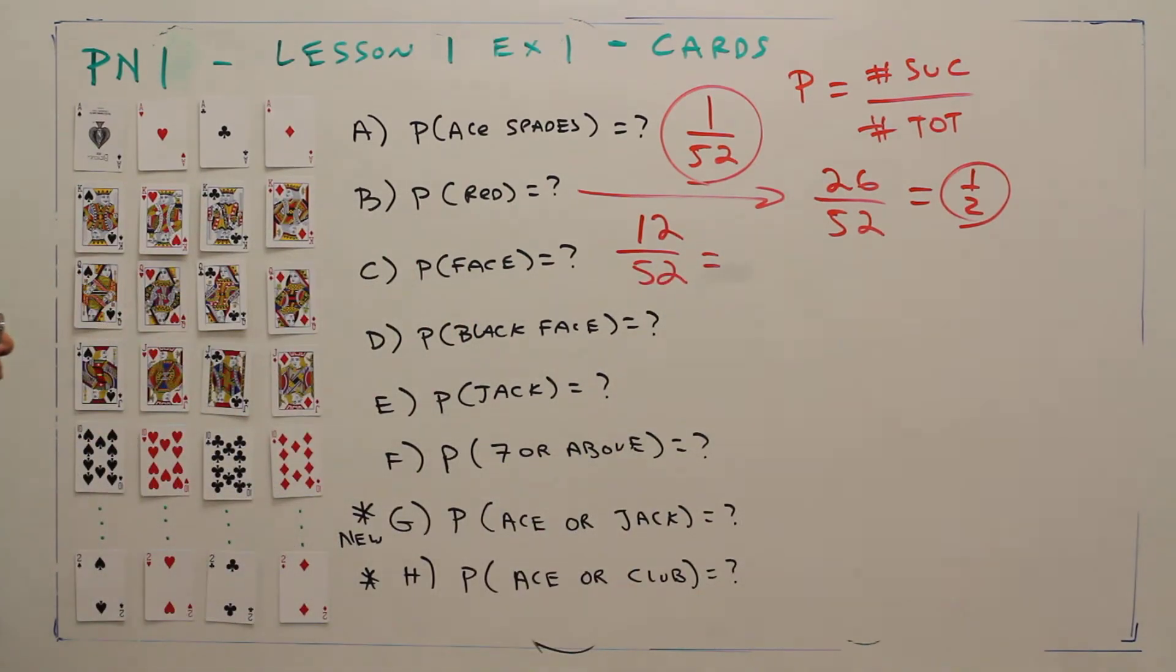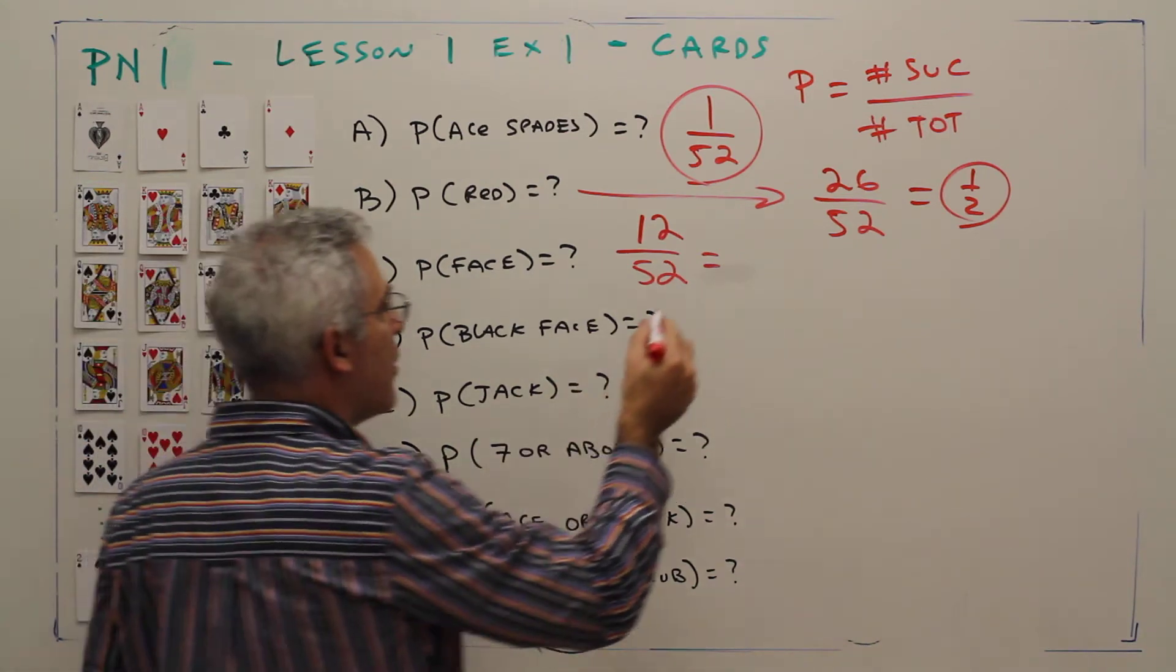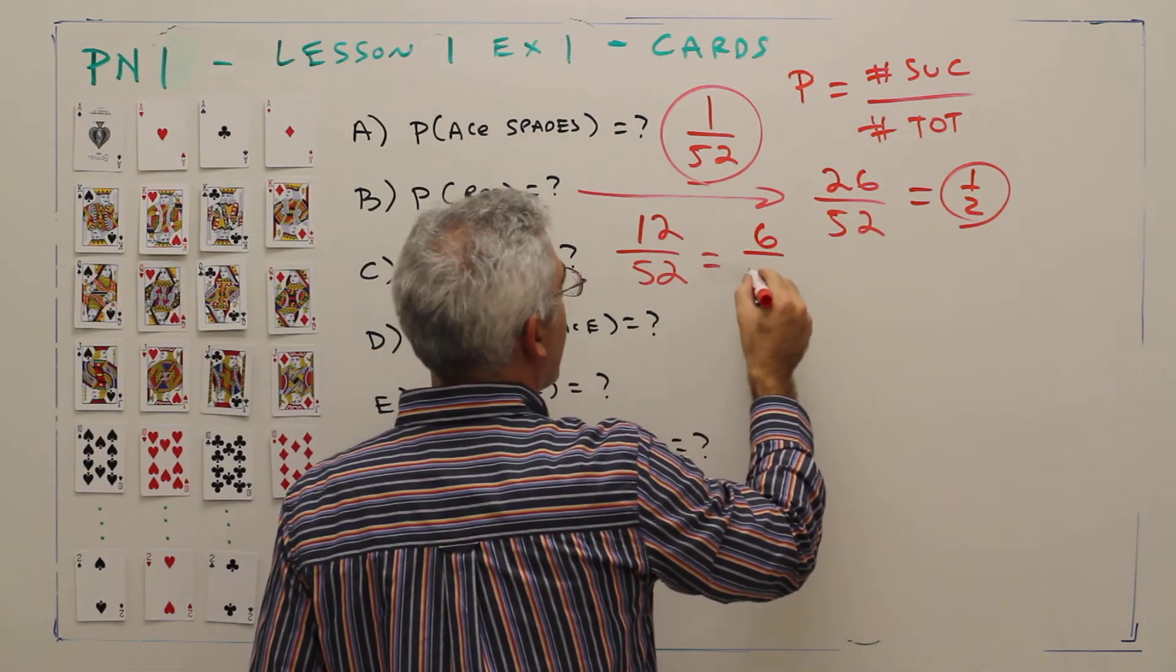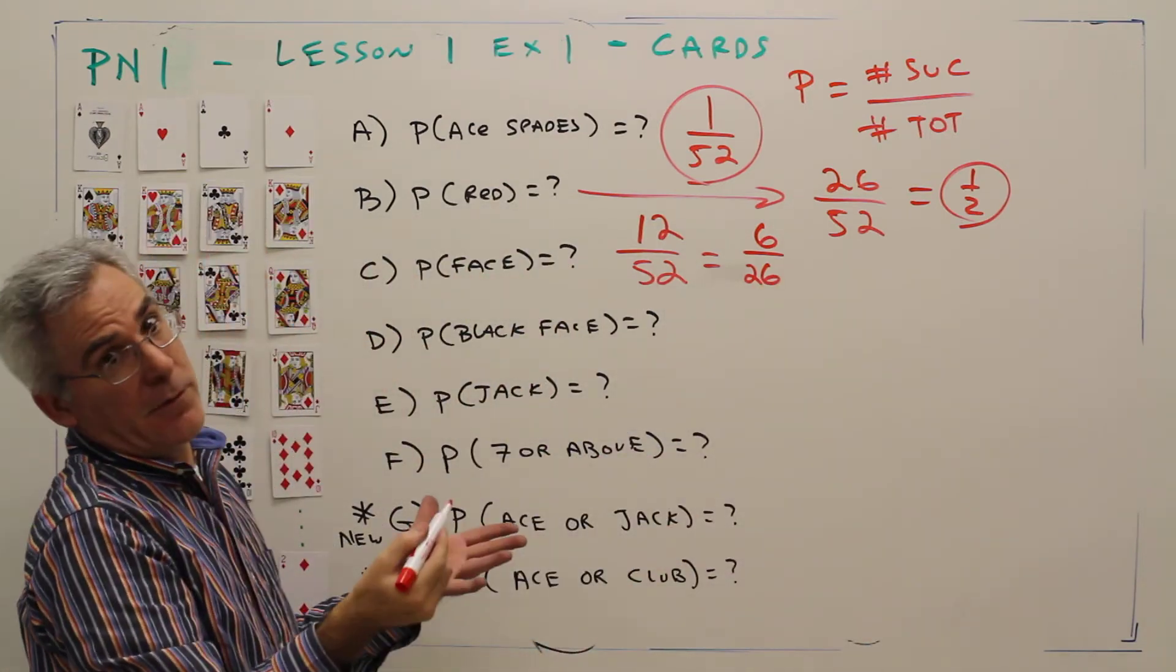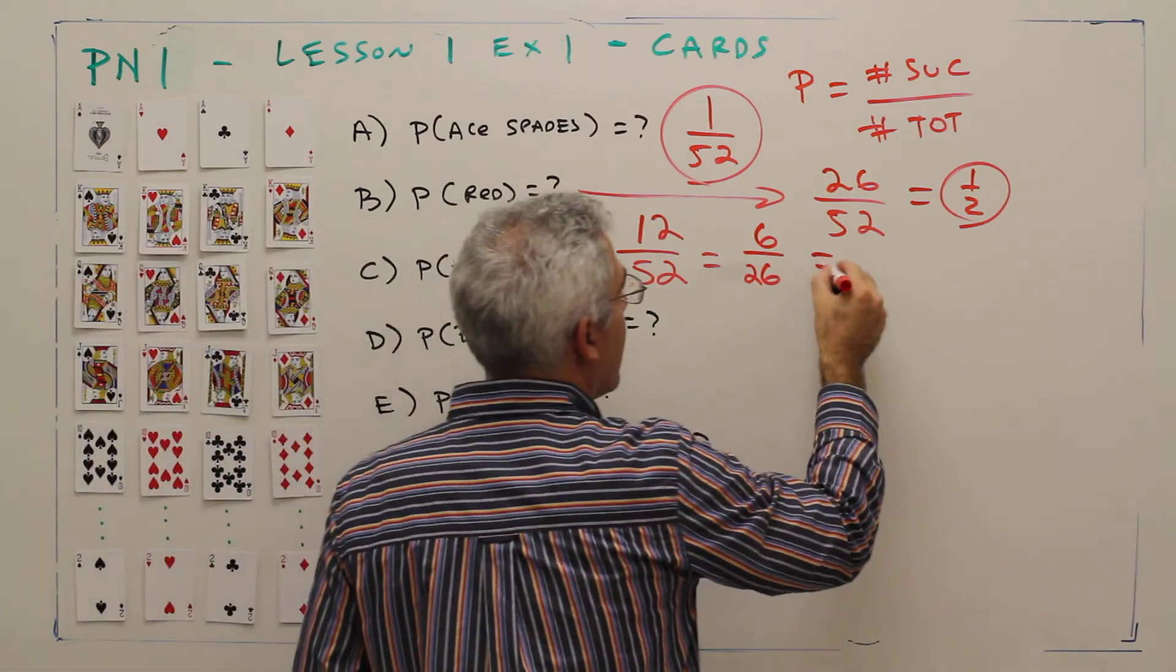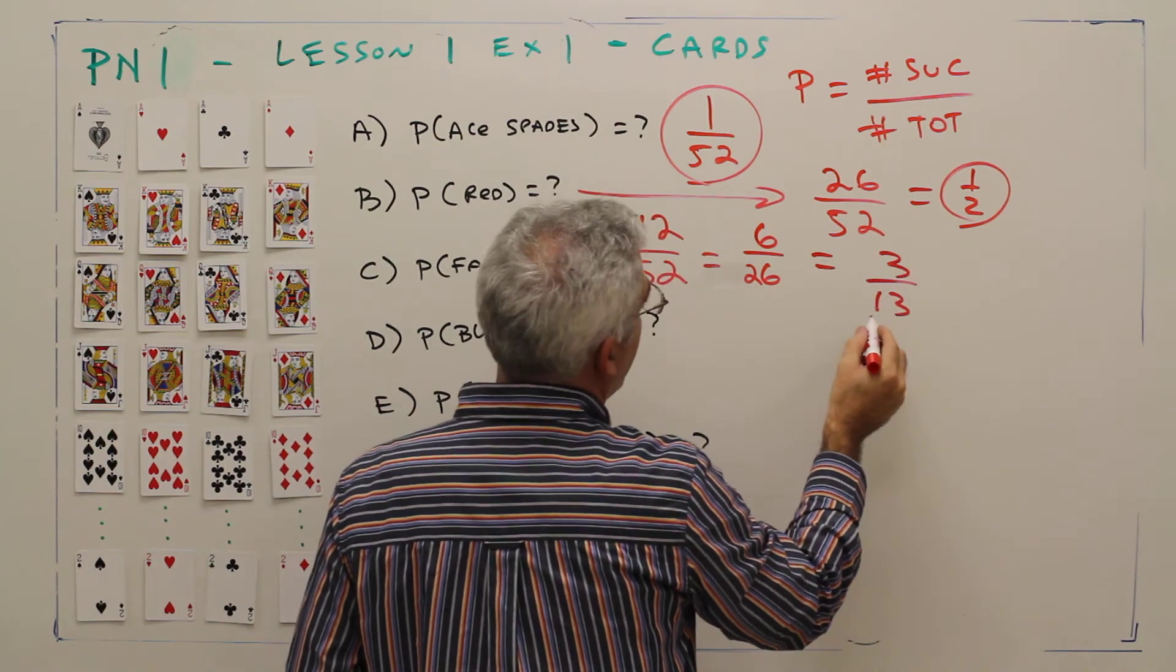That's 12 out of a total of 52. So I can divide through by 2 and get 6 over 26. I could divide through by 2 again and get 3 over 13.